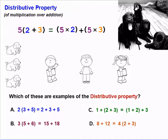The distributive property is also known as the distributive property of multiplication over addition. You can see an example of it here — we have multiplication and addition both being involved.